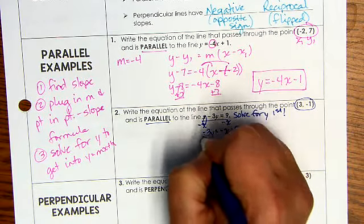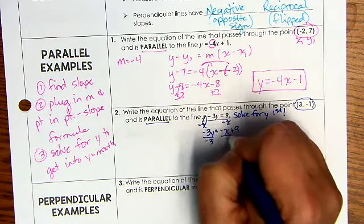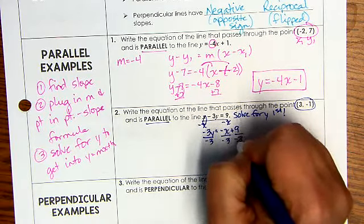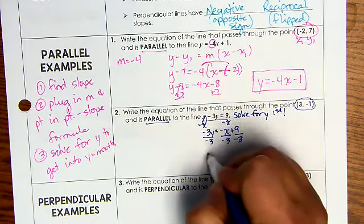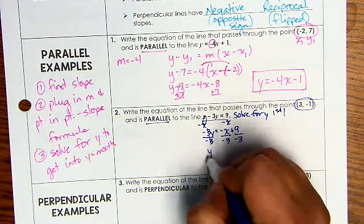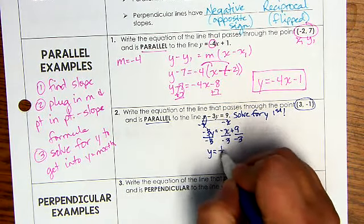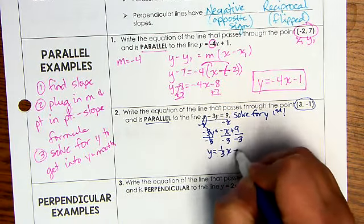So I'm going to subtract x from both sides and I get negative 3y equals negative x plus 9, divide by negative 3, divide by negative 3, divide by negative 3, negative 3, and y equals 1 third x minus 3.